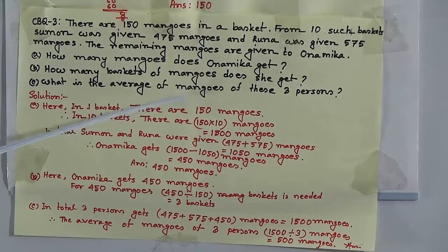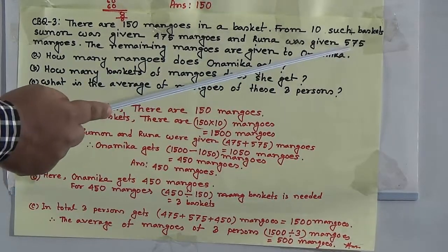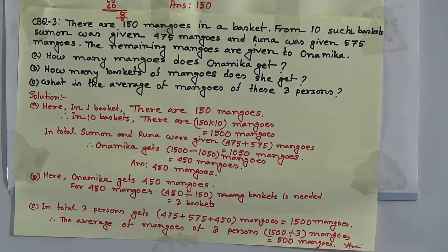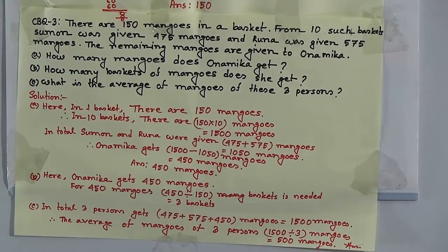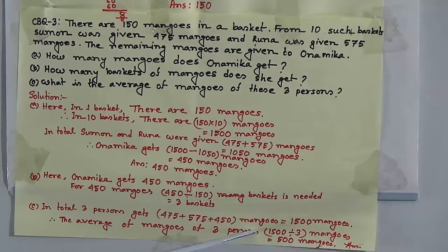Question C: what is the average of mangoes of these 3 persons — Shumon, Runa, and Onamika? Shumon's amount is 475, Runa's is 575, and Onamika's is 450 mangoes. We add all three to get 1500 mangoes. The number of quantities is 3. Using the formula, sum of quantities divided by number of quantities: 1500 divided by 3 equals 500 mangoes, and that is the answer.